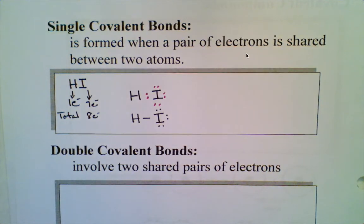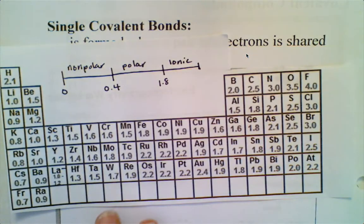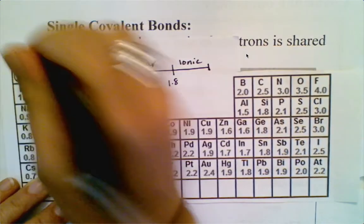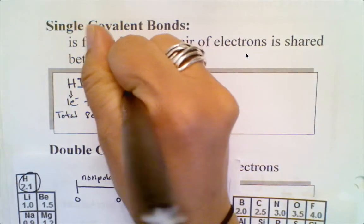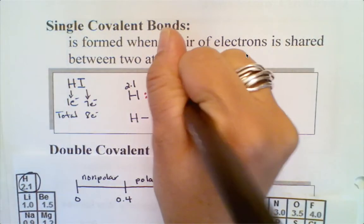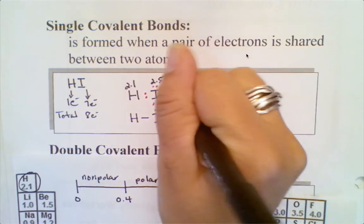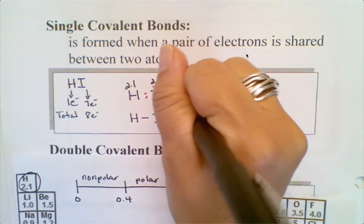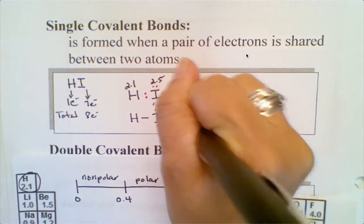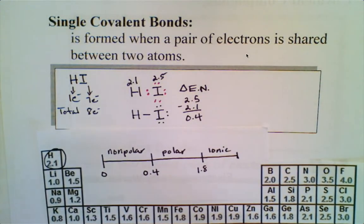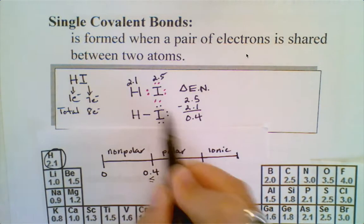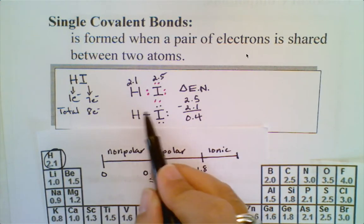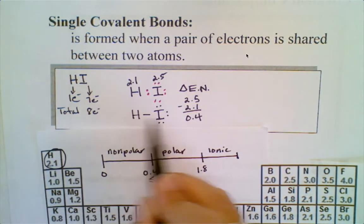Now if I want to take this a step further and look at how those shared pair of electrons are being shared, I would use my electronegativity values. I would find hydrogen which is 2.1 and iodine which is 2.5, then I would calculate the difference in electronegativity, delta EN. So I would do 2.5 minus 2.1 which is 0.4, and then I look at my continuum. If my value is less than or equal to 0.4, this is considered to be a non-polar covalent bond, meaning this shared pair of electrons is being shared equally. There isn't a greedy atom of the two.